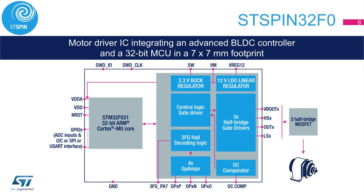Let's have a look in more detail at all the features of STSpin 32F0. First, the high-performance, low-voltage, three-phase gate drivers with 600 mA current capability can drive a wide range of MOSFETs or IGBTs. The gate drivers feature cross-conduction protection, under-voltage lockout, thermal shutdown, and programmable overcurrent protection. The integrated bootstrap diodes save overall bill of material and also save space on the PCB — a key parameter in portable and high-performance products like power tools.